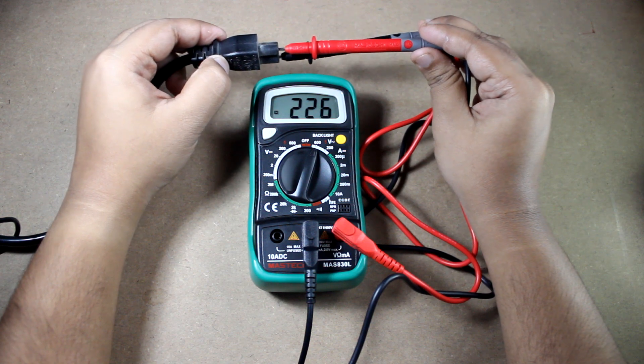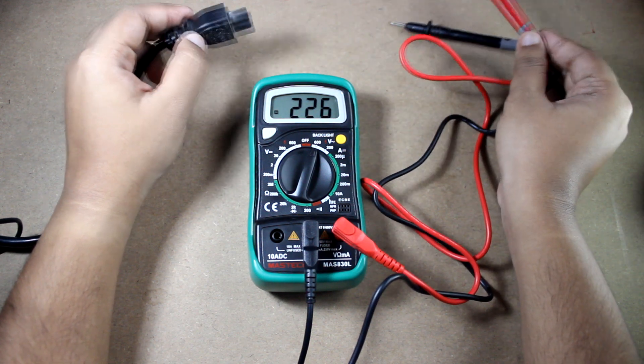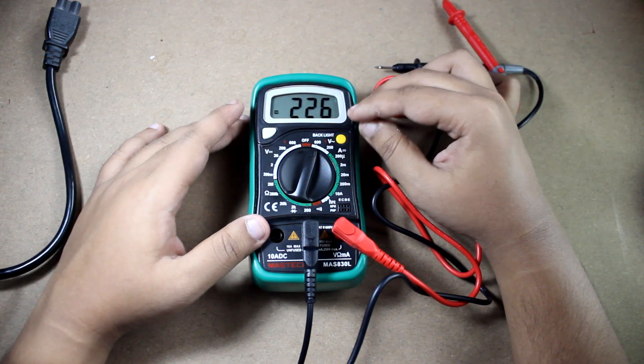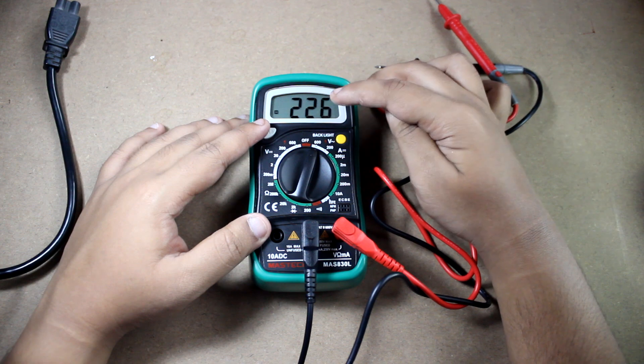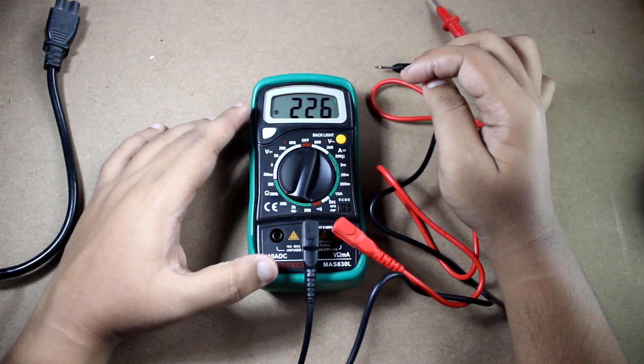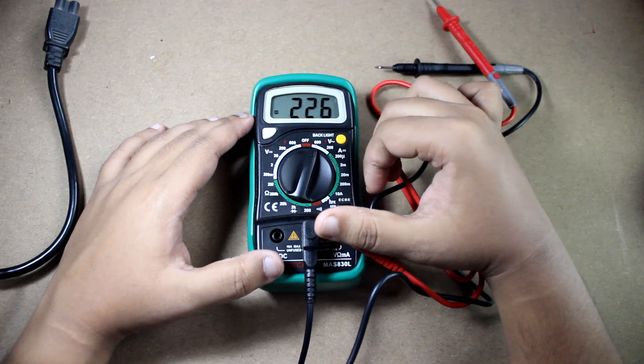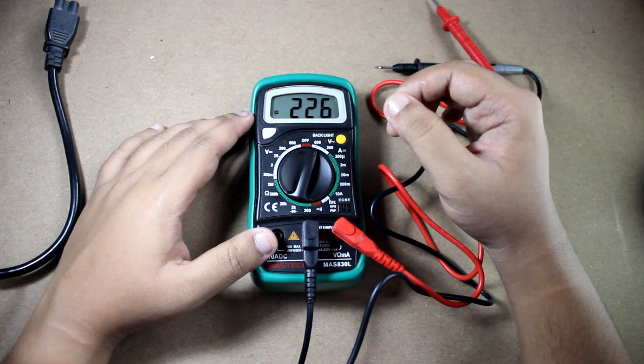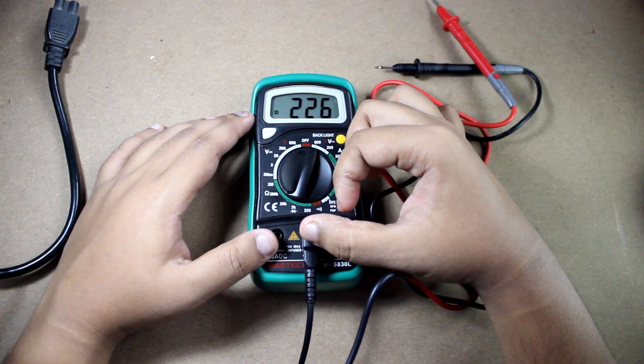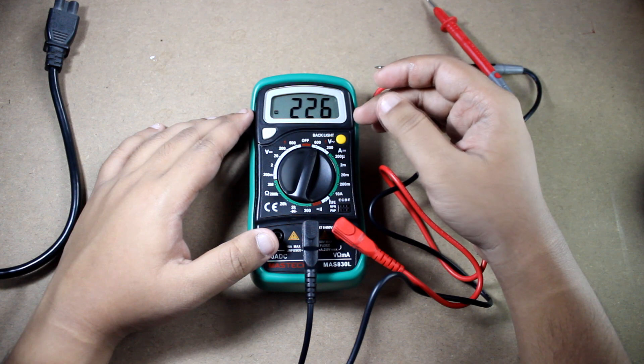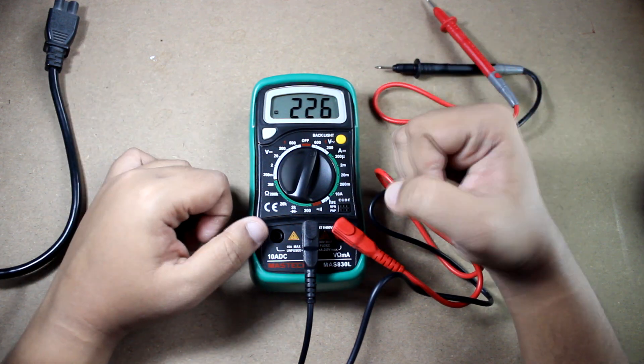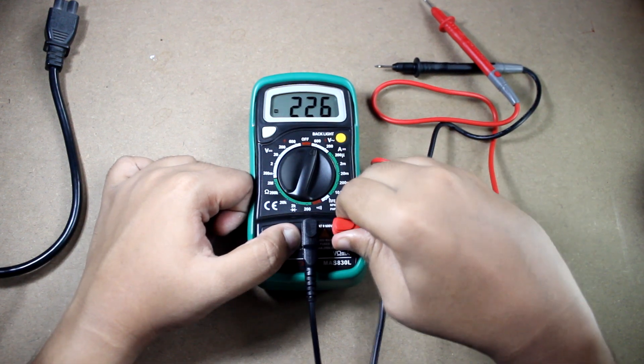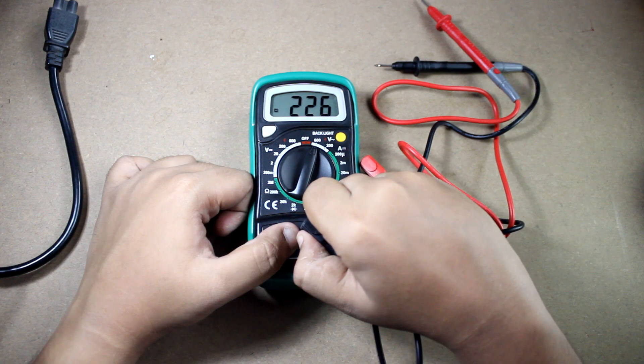So that's how you can take the reading of AC voltage by a multimeter. This is showing 226 volt AC. Now if you want to remove the probes from the multimeter, do the reverse. In the first process we did the common terminal first, then put the red terminal. In this process, at the time of taking out the probes, first take out the red probe, then take out the ground probe.